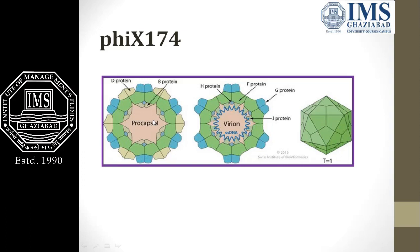This is a procapsid — a primitive form that has only the protein part or capsid but does not contain nucleic acid. When it arranges its DNA inside, we call it a virion. It contains a D protein and a B protein. The spherical procapsid then incorporates single-stranded circular DNA inside, which attaches with the J protein. Other proteins include H, F, G, and J proteins.